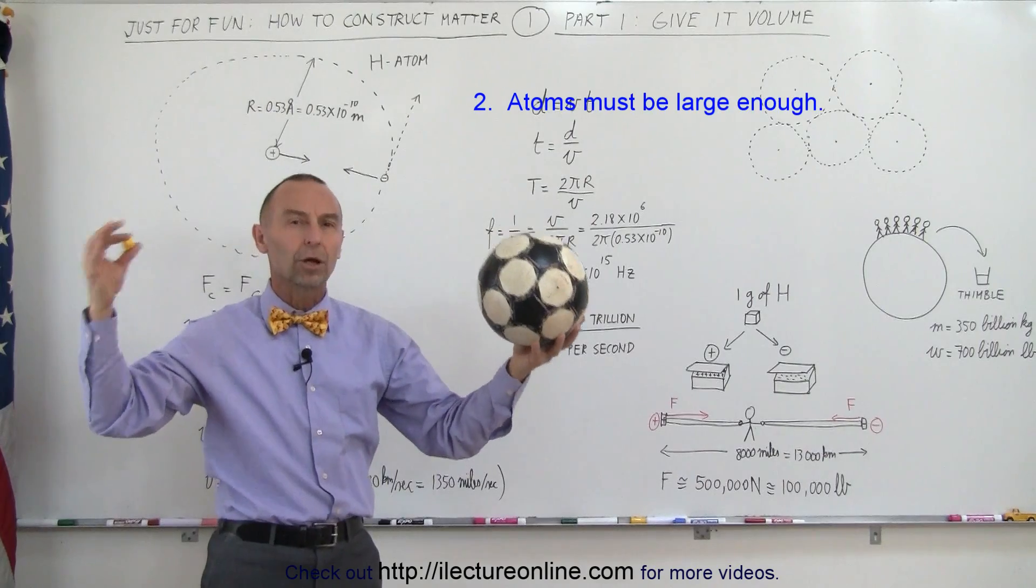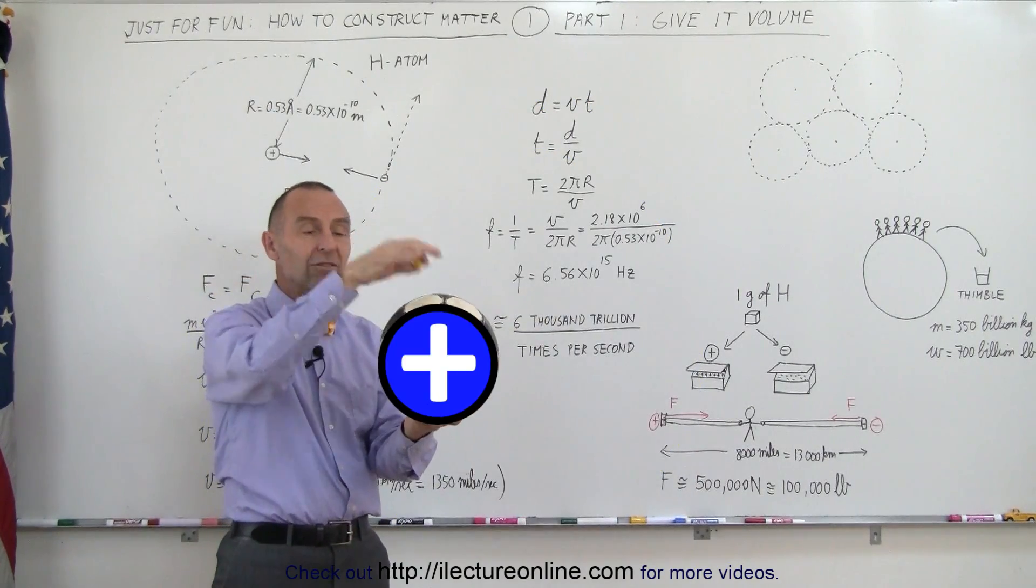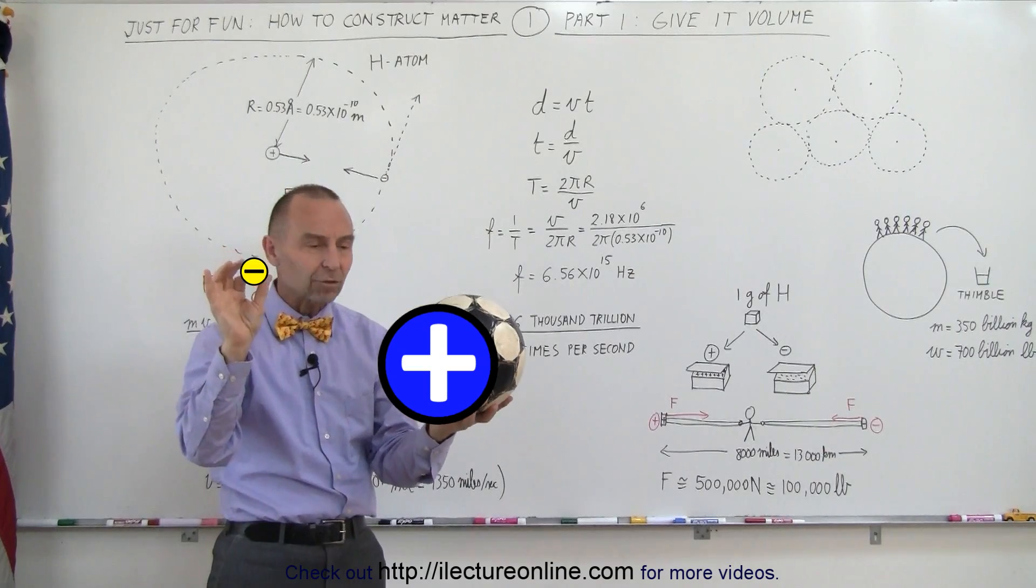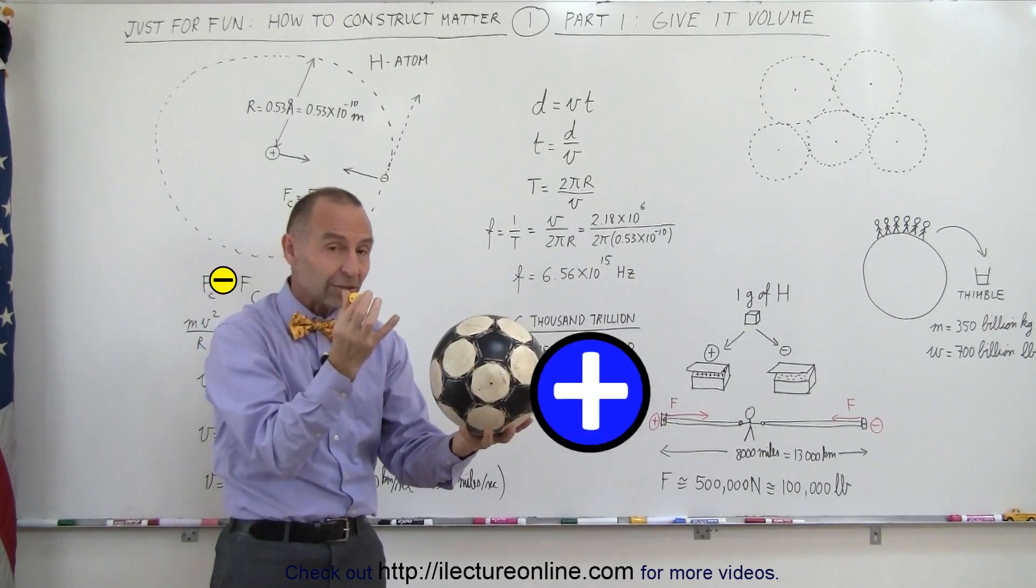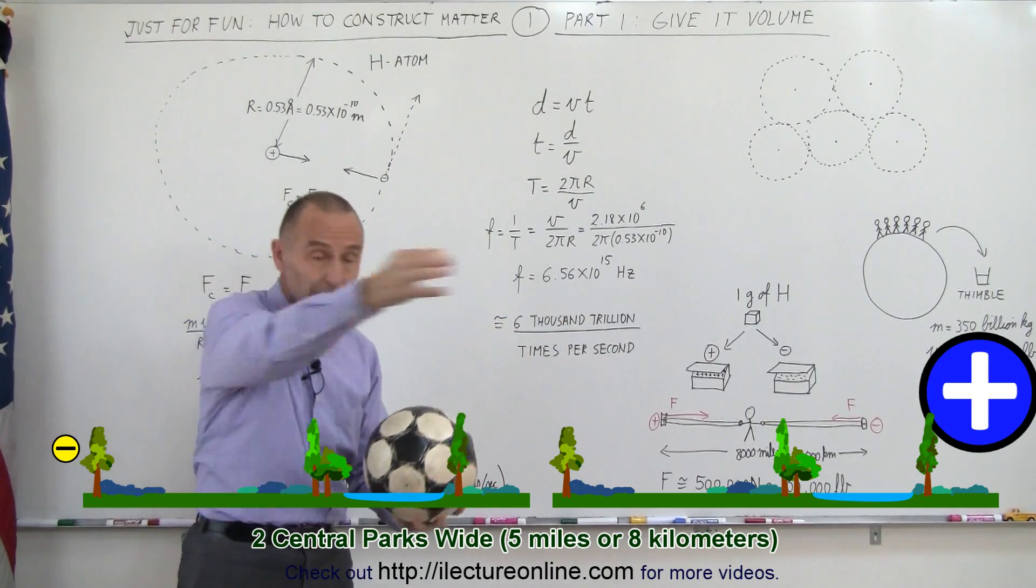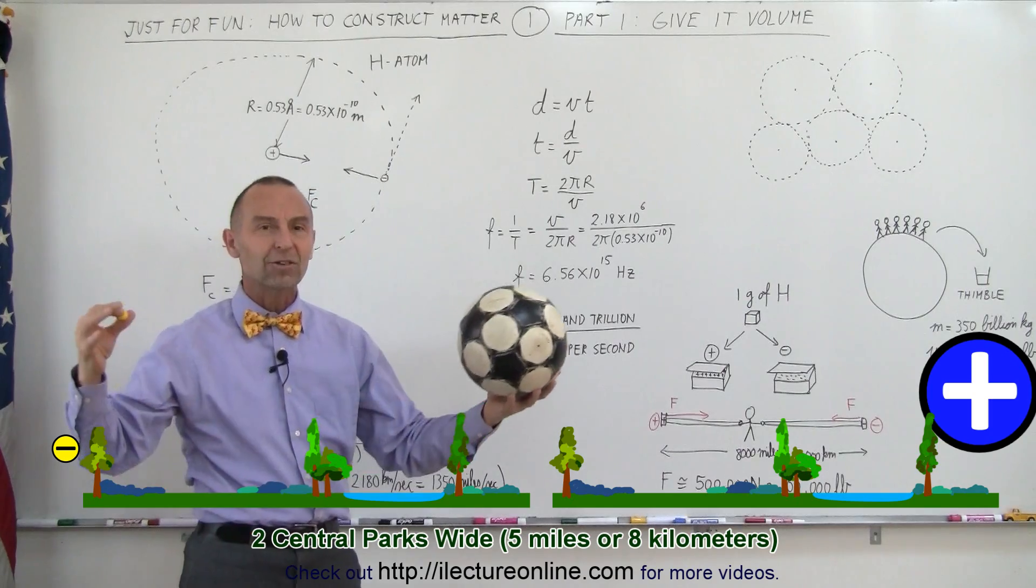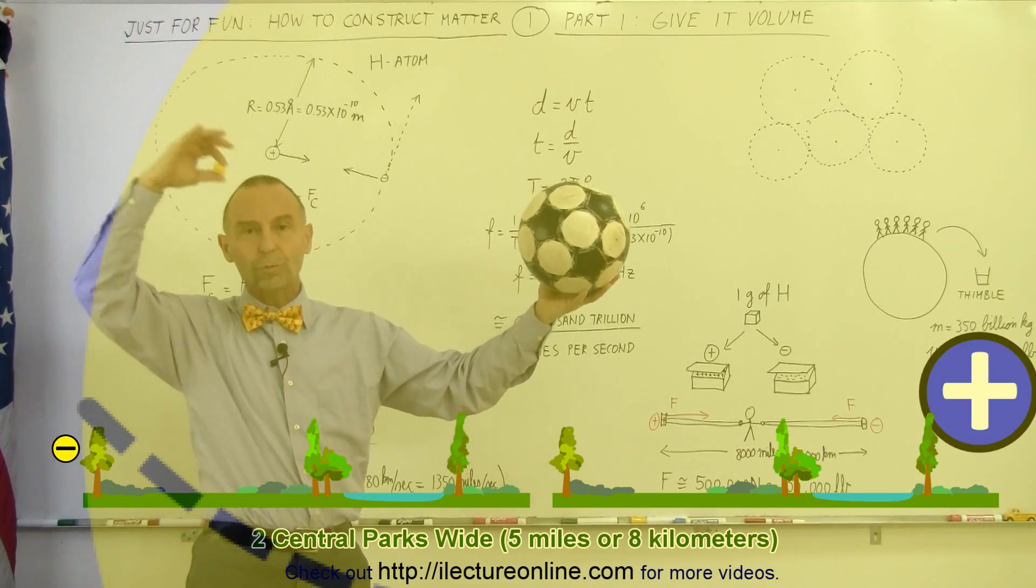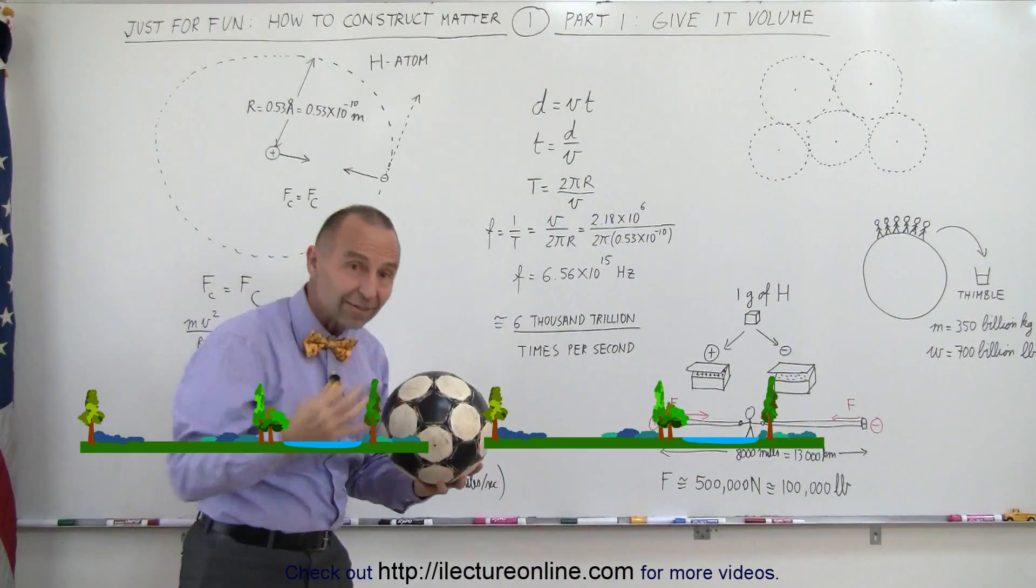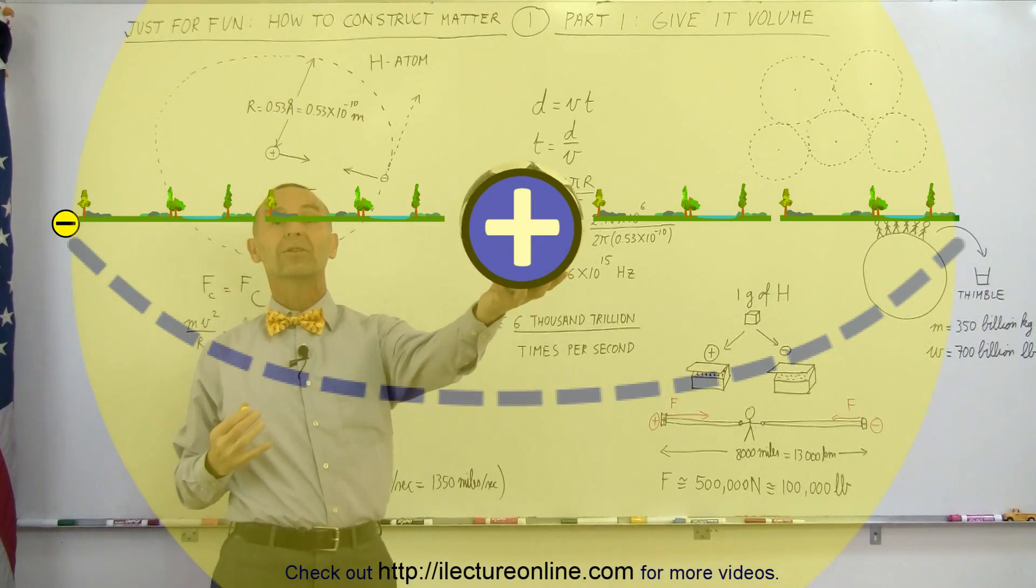Second thing is you want the atom to be large enough so that you actually have volume. If you take this to be the nucleus and this to be the electron at this scale, this electron would be about 5 miles away or 8 kilometers away, zipped around the nucleus this incredible number of times every second. Imagine this large shell, this enormously large shell, 10 miles in diameter or 16 kilometers in diameter with this being at the nucleus.